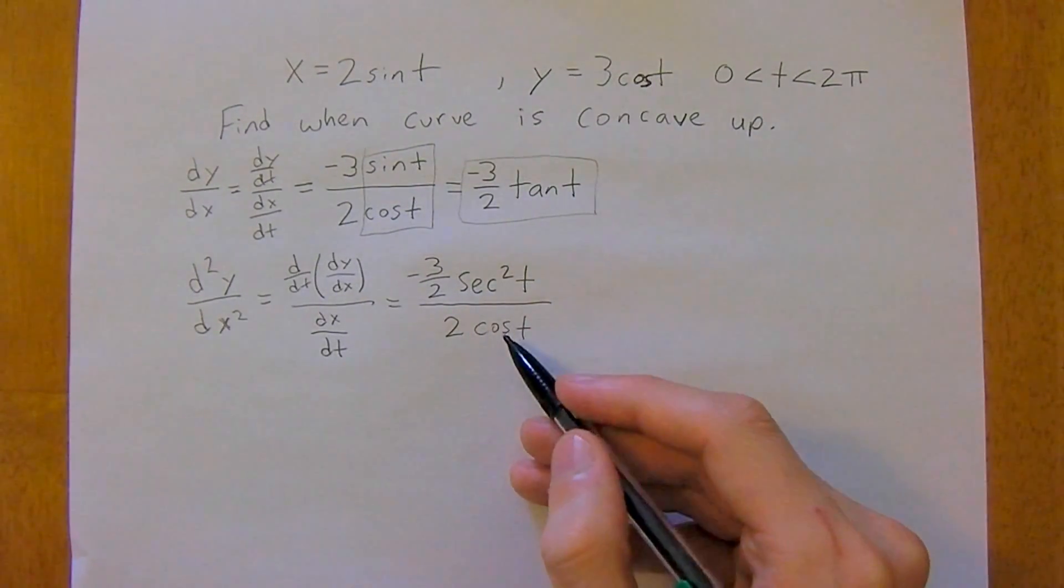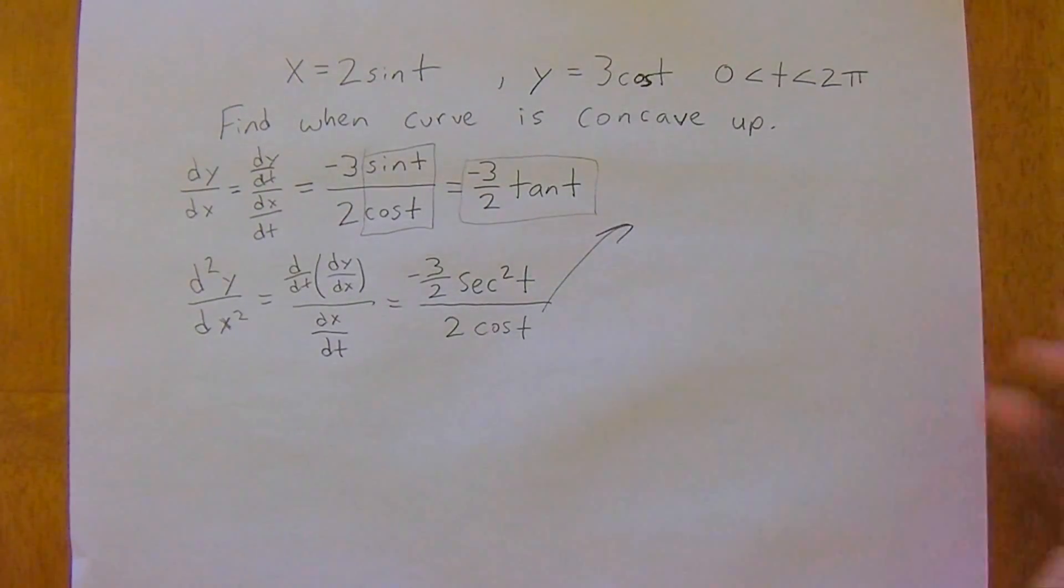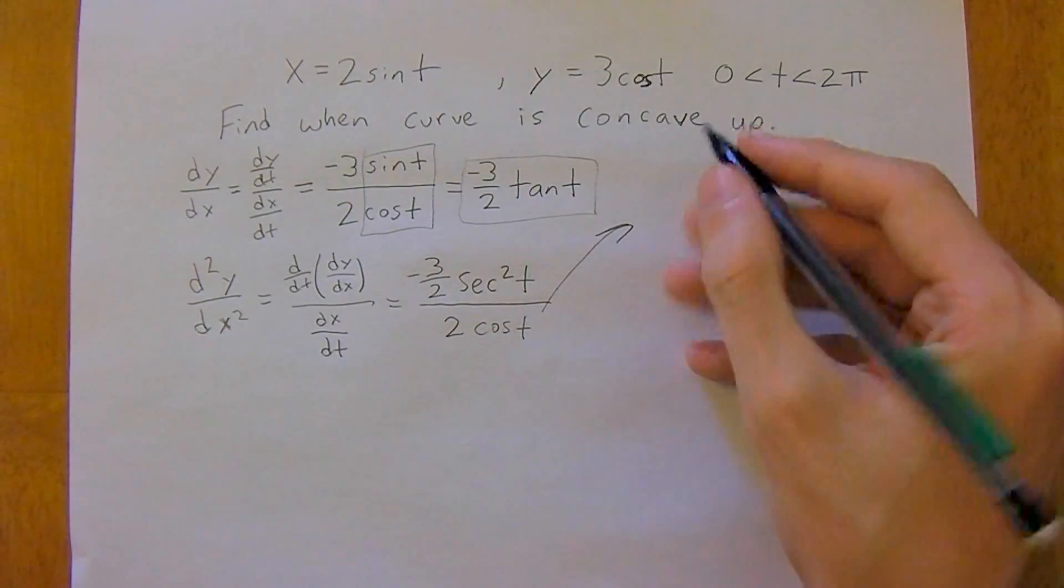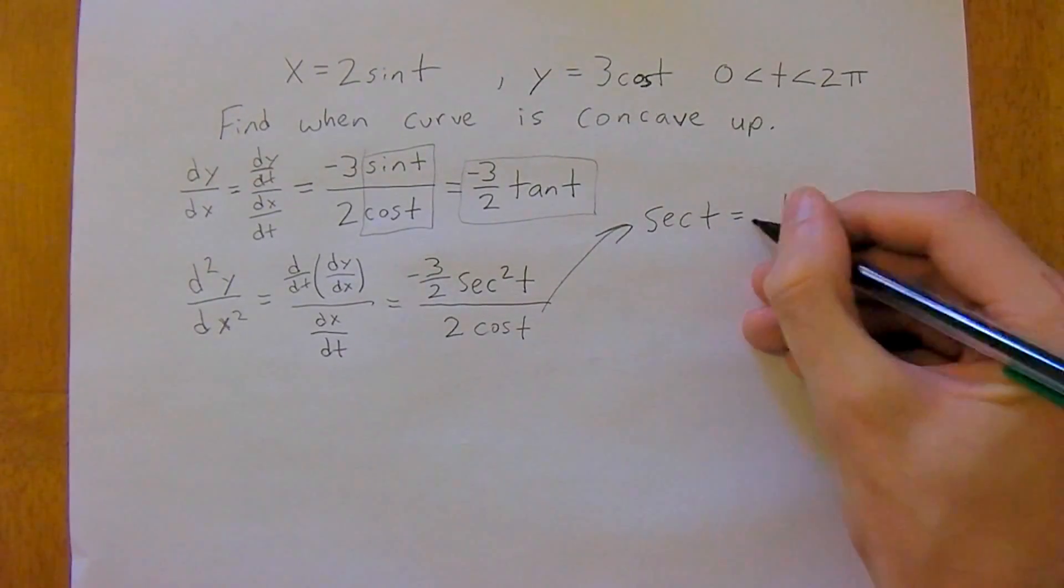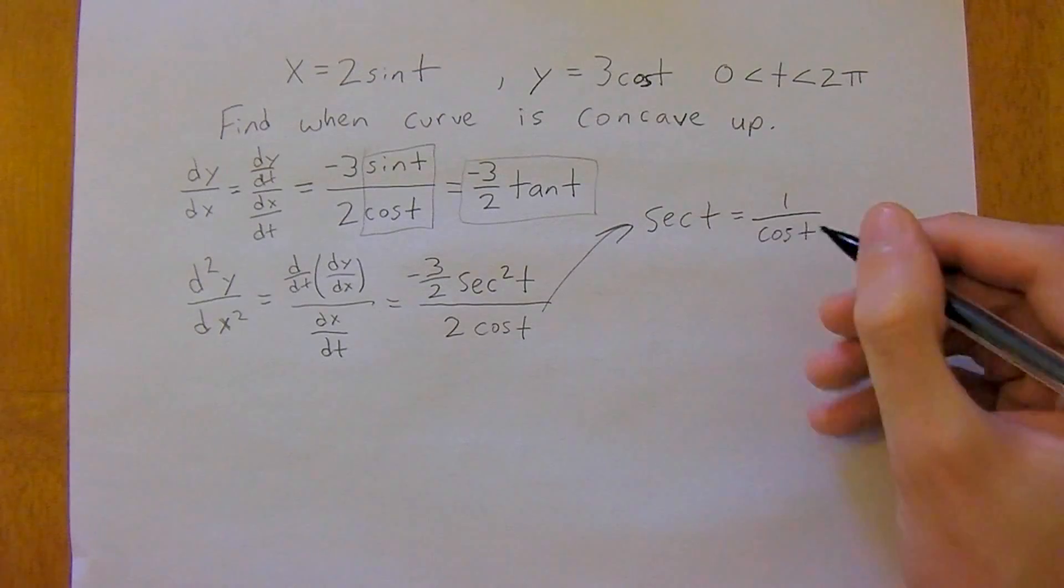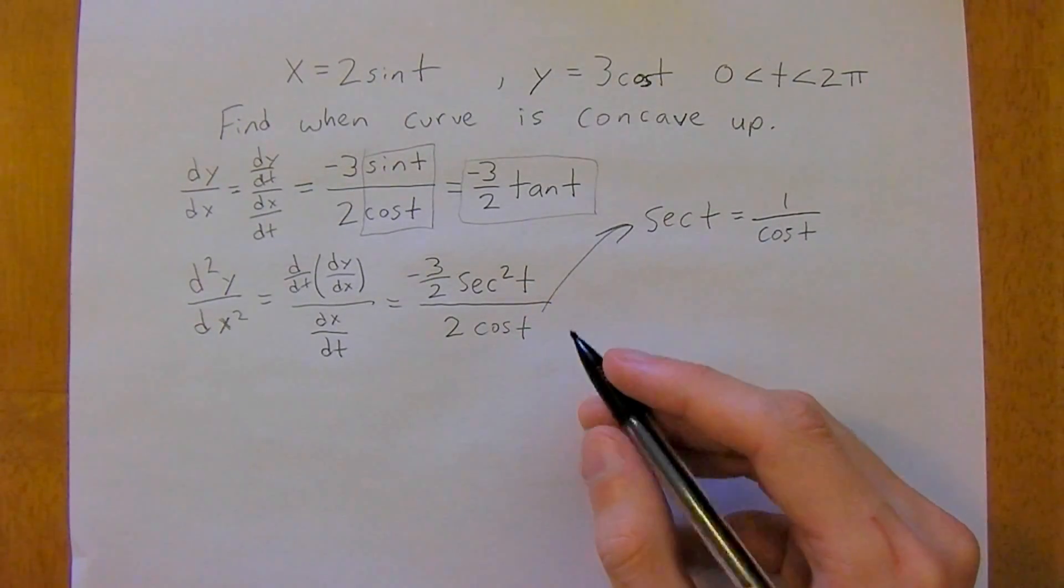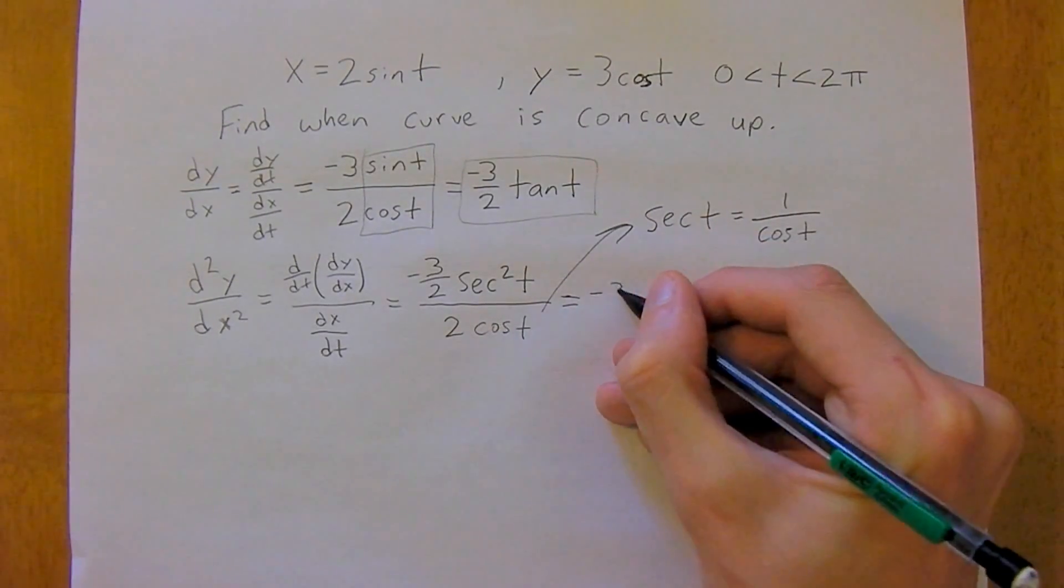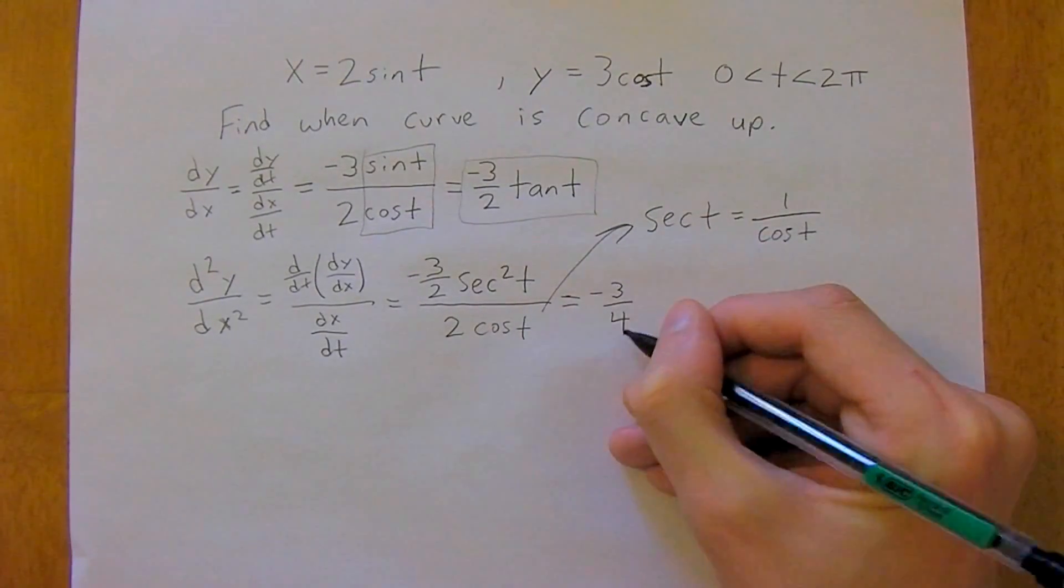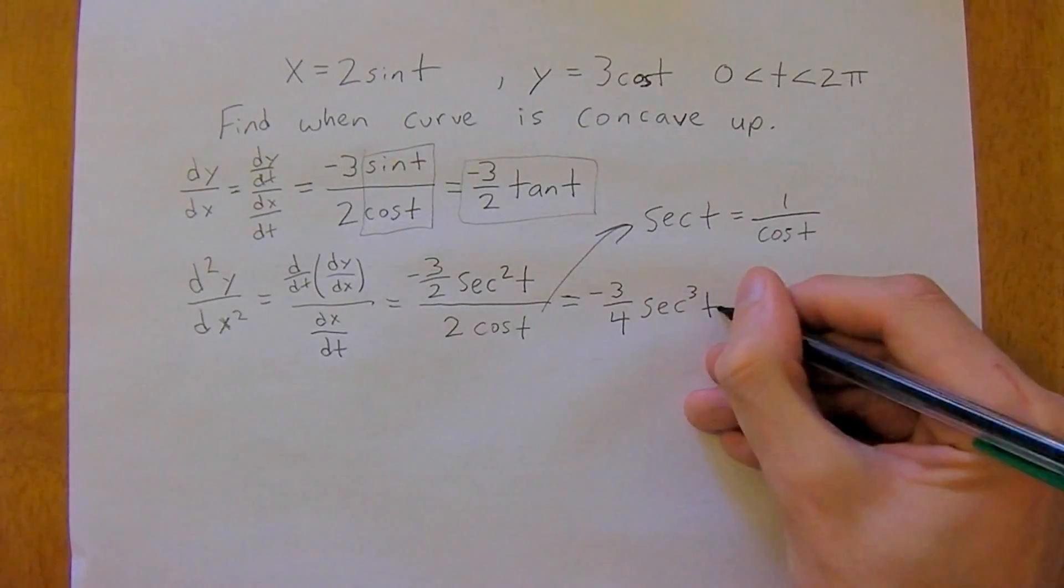And now there's another trig identity, so really the trick to this problem here is trig identities. So secant t is equal to 1 over cosine t. So in this case, we can now say that this is equal to negative 3 over 4 secant cubed t.